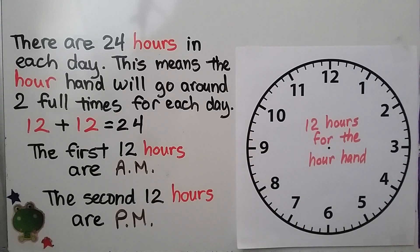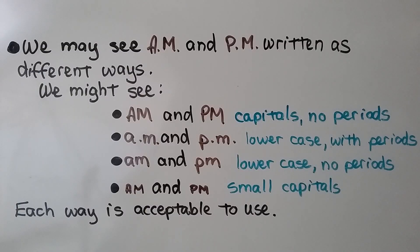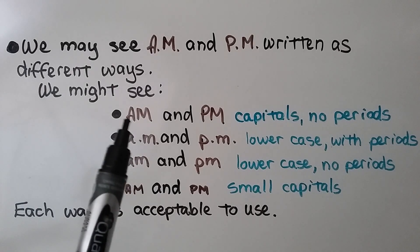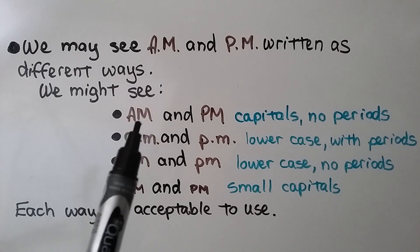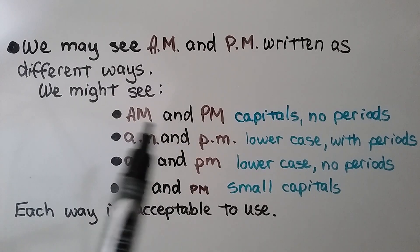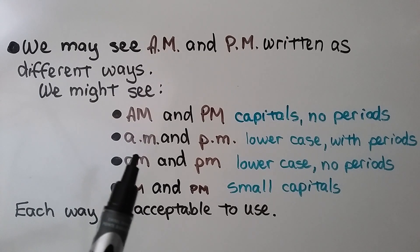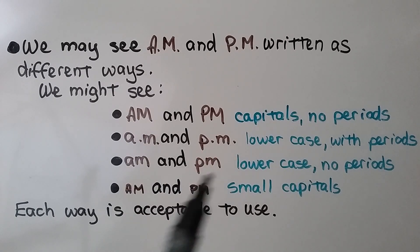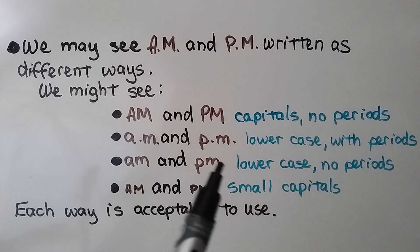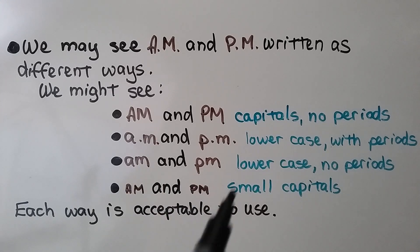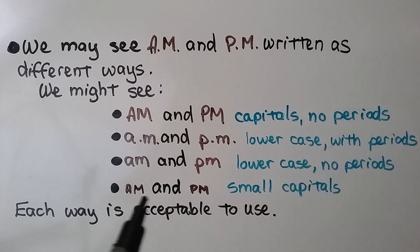We may see A.M. and P.M. written in different ways. We might see just capital A.M. and capital P.M. with no periods. We might see lowercase with periods: a.m. and p.m. We might even see lowercase with no periods, or you might even see small capitals. But each way is acceptable to use.